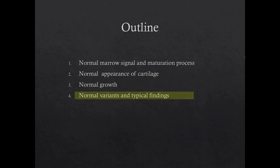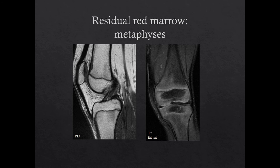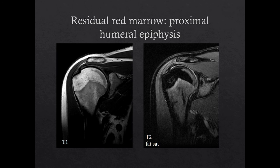Next, we will move on to a discussion of some normal variants and typical findings seen in pediatrics. Seeing residual red marrow is a frequent occurrence in pediatric musculoskeletal MR imaging. It is good to be aware of certain locations where this more commonly occurs. It is common to see residual red marrow in the axial skeleton and in the metaphyses, which are the last places in a long bone to convert to fatty marrow. Two other common locations are the proximal humeral and femoral epiphyses and within the bones of the feet. Here is an example of residual red marrow in the metaphyses of two different patients, showing the typical linear or flame-shaped appearance, which is perpendicular to the physis and non-mass-like. Here is an example of normal residual red marrow in the proximal humeral epiphyses, with a typical crescent configuration along the medial aspect of the epiphyses. This should not be confused with avascular necrosis, which would demonstrate flattening or collapse.